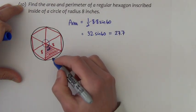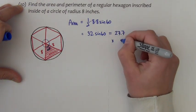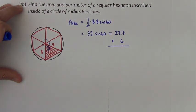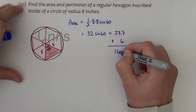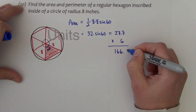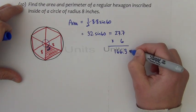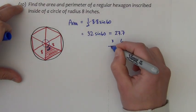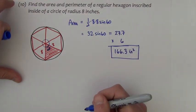Now that's the area of just the triangle. Take this times six. I get an area of 166.3 inches squared. So there's our area.